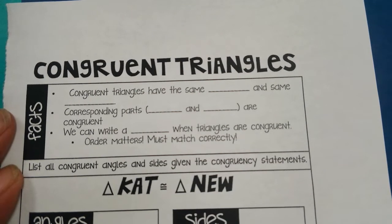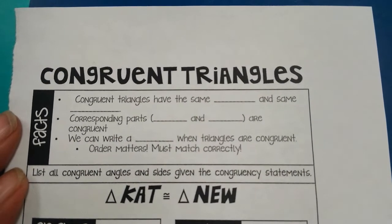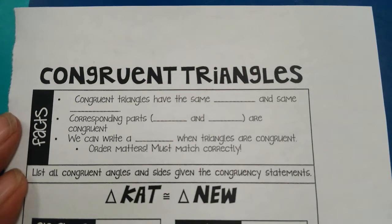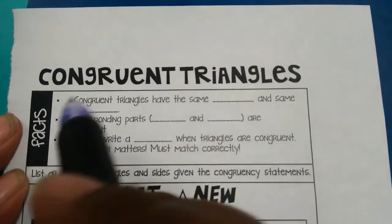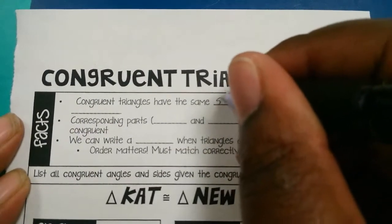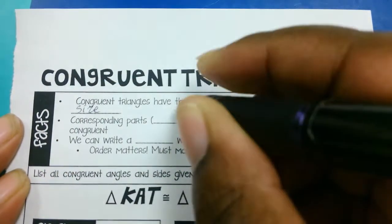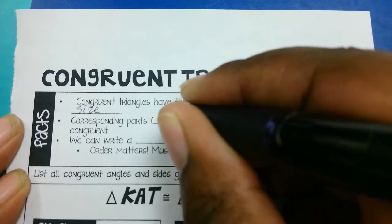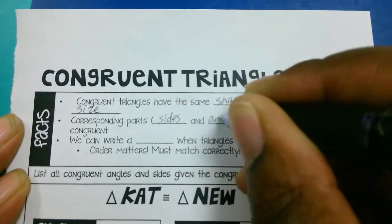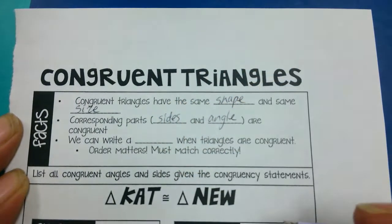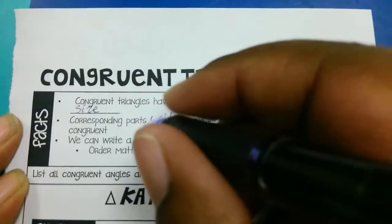Hello geometry students, we're going to make a video today of congruent triangles. Congruent triangles have the same shape and the same size. Corresponding parts, the sides and the angles, are congruent and we can write a congruent statement.